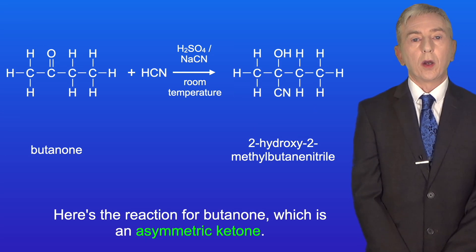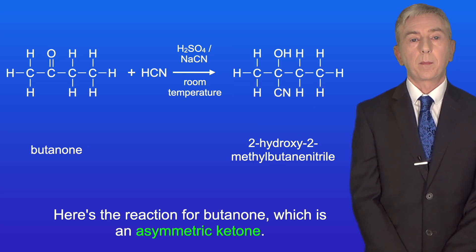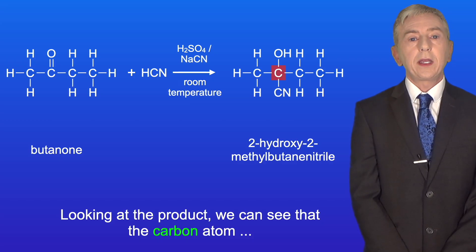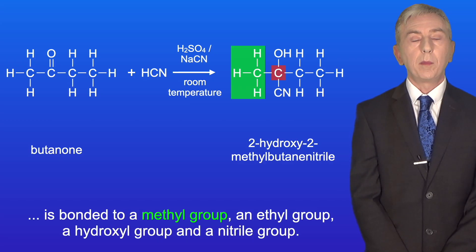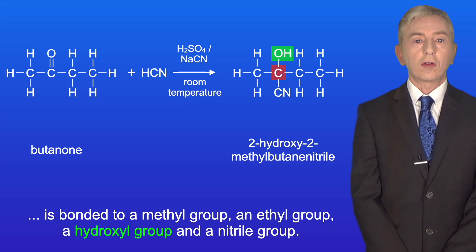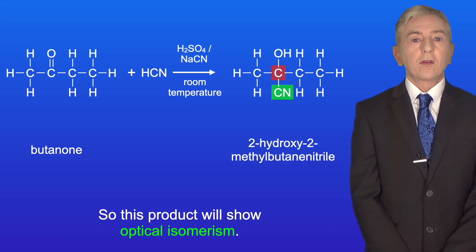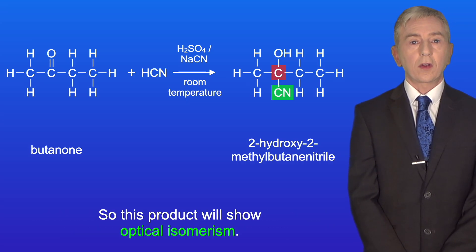Here's the reaction for butanone, which is an asymmetric ketone. Looking at the product, we can see that the carbon atom is bonded to a methyl group, an ethyl group, a hydroxyl group, and a nitrile group. So this product will show optical isomerism.